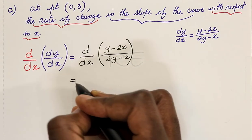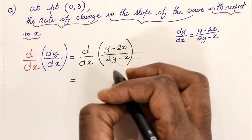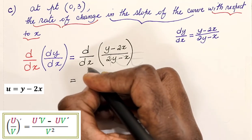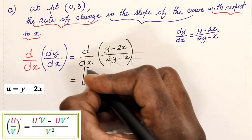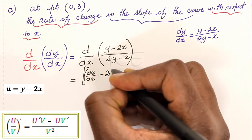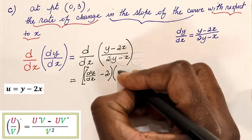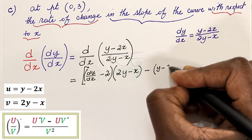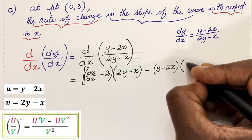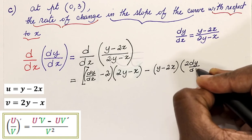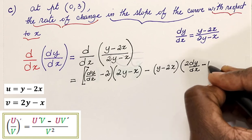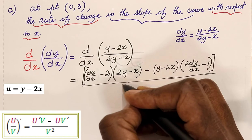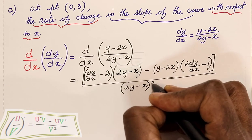Let's first find the general expression: d/dx of y minus 2x over 2y minus x. This is the derivative of a quotient. The quotient rule gives u prime — which is dy dx minus 2 — times v, the denominator 2y minus x, minus u, which is y minus 2x, times v prime, which is 2 dy dx minus 1. The whole thing is divided by v squared, which is (2y minus x) squared.